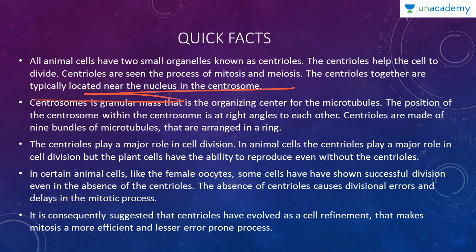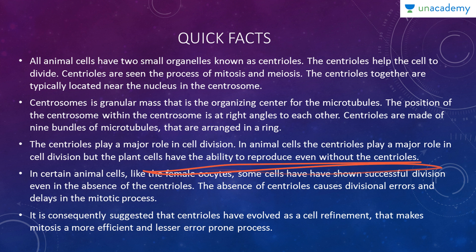The centrioles together are typically located near the nucleus in the centrosome. The centrosome is a granular mass that is the organizing center for microtubules. The two centrioles within the centrosome are positioned at right angles to each other — both are present perpendicular to one another. Centrioles are made of nine bundles of microtubules arranged in a ring, and they play a major role in cell division in animal cells.